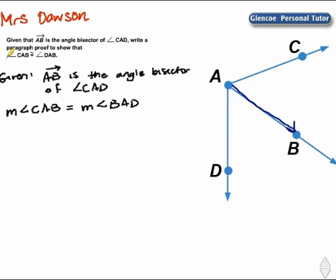We wanted to prove that angle CAB is congruent to angle DAB. If two angles have the same measure, that means that the angles are congruent. Therefore, angle CAB is congruent to angle DAB.